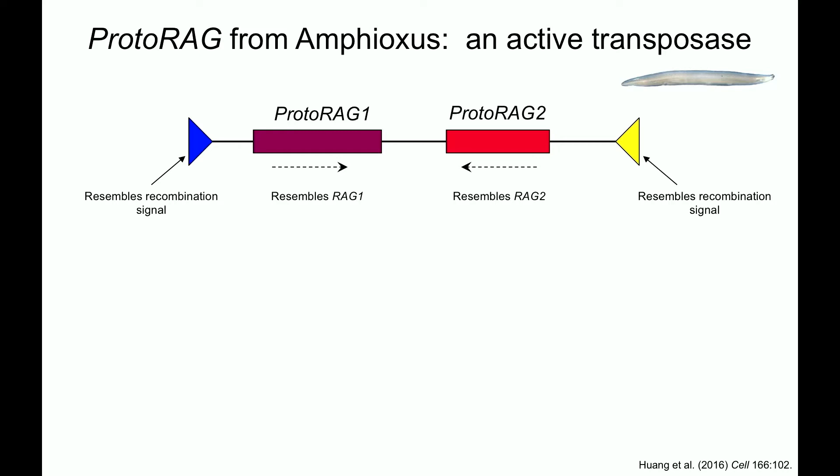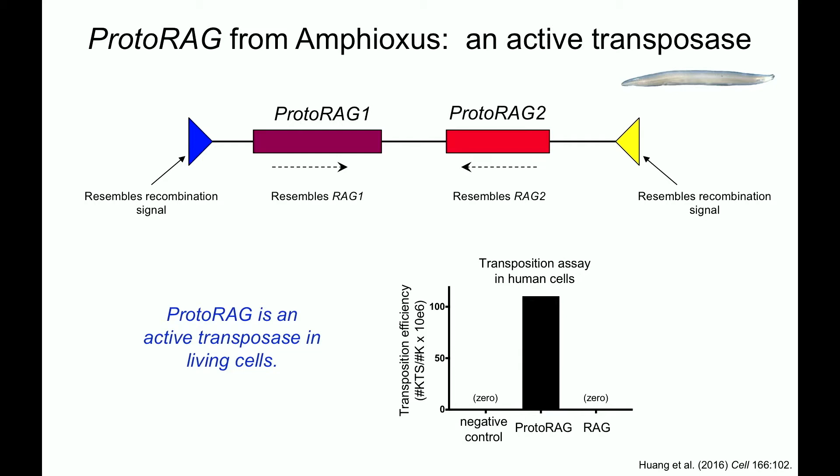We were more interested in their differences than their similarities. There was something proto-RAG could do that RAG couldn't: it was able to transpose in living cells. Our typical transposition assay, done in human cells, showed that proto-RAG is nicely active while RAG is a complete zero. The question was why — why is proto-RAG able to transpose and RAG isn't? We guessed that if we could get some structural information — molecular structures of proto-RAG — maybe we could figure this out.